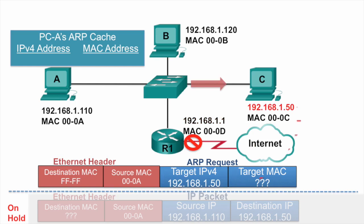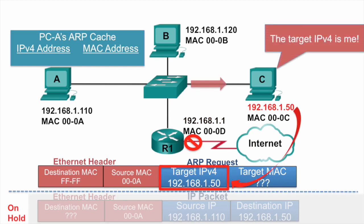PCC receives the ARP request and compares its IPv4 address against the target IPv4 address, and notices that it is the intended target of the ARP request — that the target IPv4 address does match its own IPv4 address. So PCC will need to send an ARP reply.